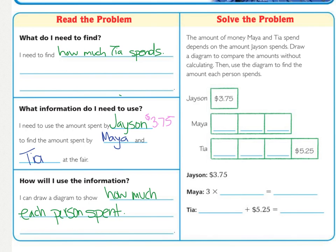So, the first thing that you need to do is, you need to draw a box. And, they did that for you. For Jason. Okay. And, how much did Jason spend? He spent $3.75. So, this box is worth $3.75.